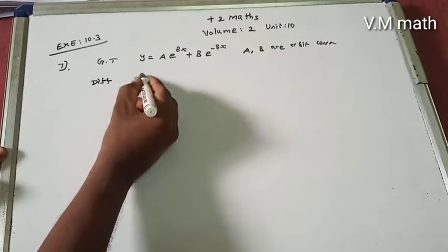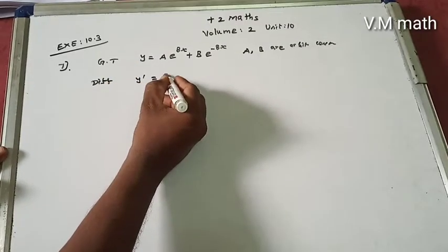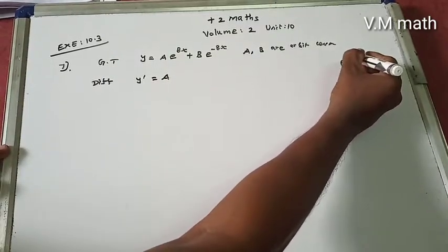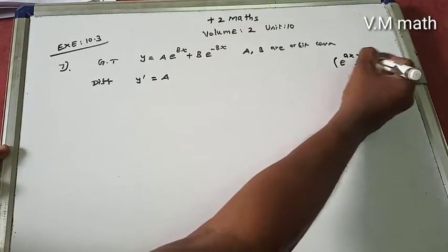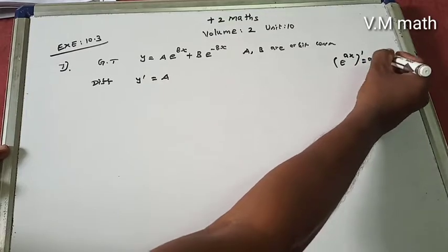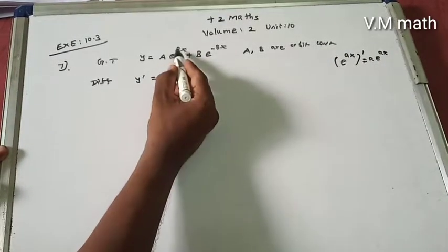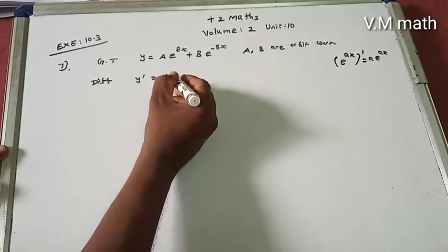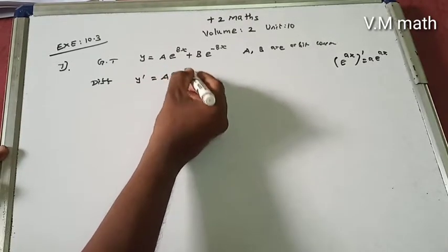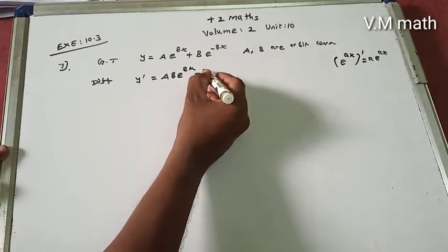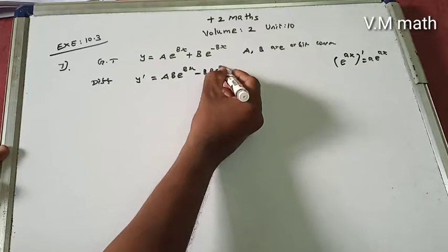First differentiation: y dash equals A times e power 8x. Using the differentiation formula for e power ax, we get 8 times A times e power 8x minus B times 8 times e power minus 8x.